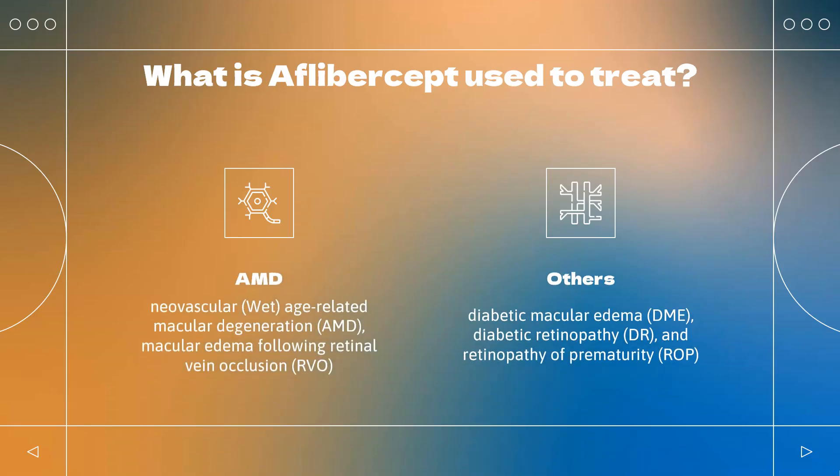What is Aflibercept used for? The ophthalmic agent is used for the treatment of neovascular (wet) age-related macular degeneration (AMD), macular edema following retinal vein occlusion (RVO), diabetic macular edema (DME), diabetic retinopathy (DR), and retinopathy of prematurity (ROP).